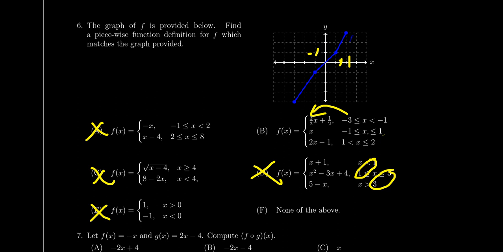And then lastly, if you plug in negative three into this one, you'll get negative nine halves plus one half, which is negative eight halves, which is negative four, which is this point right here. So you can see that all of these points seem to match up here.